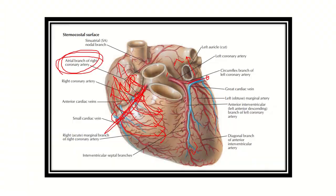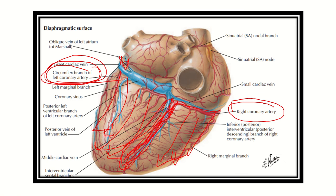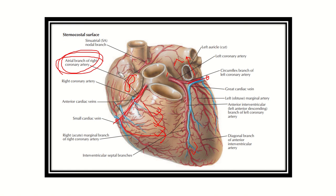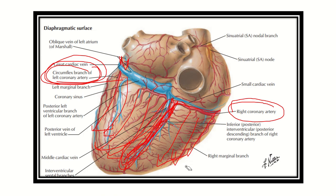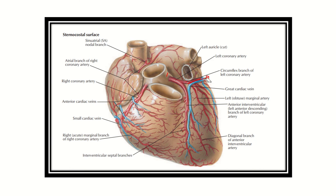In summary, the right coronary artery supplies the right atrium, the right ventricle (maximum part, except a smaller part along the anterior interventricular groove), the SA node which lies in the right atrium, the AV node which lies between the right atrium and right ventricle, and the posterior interventricular groove area.